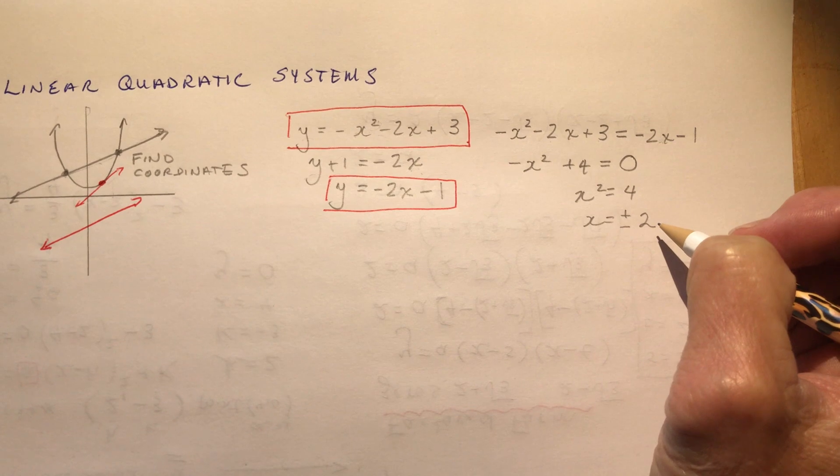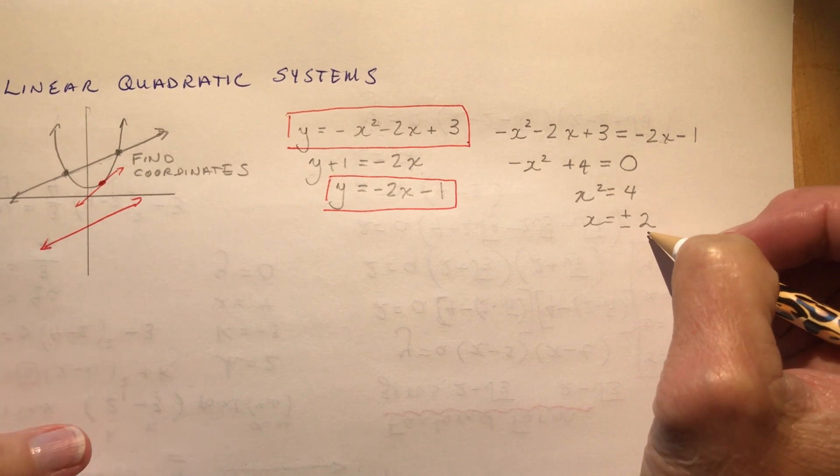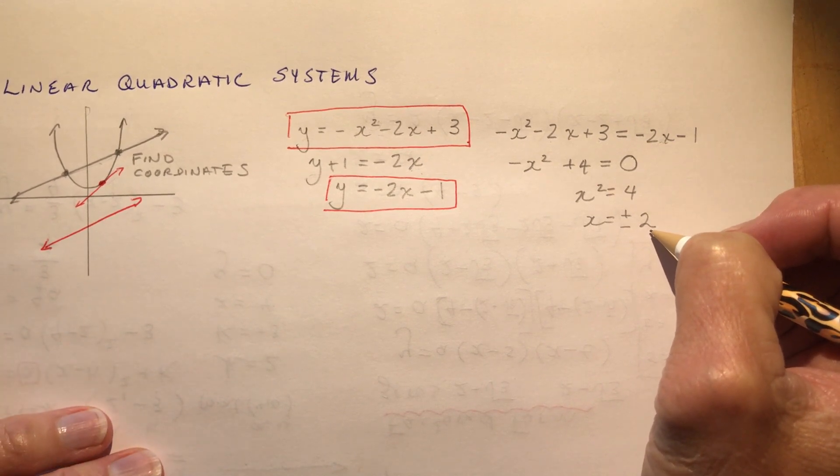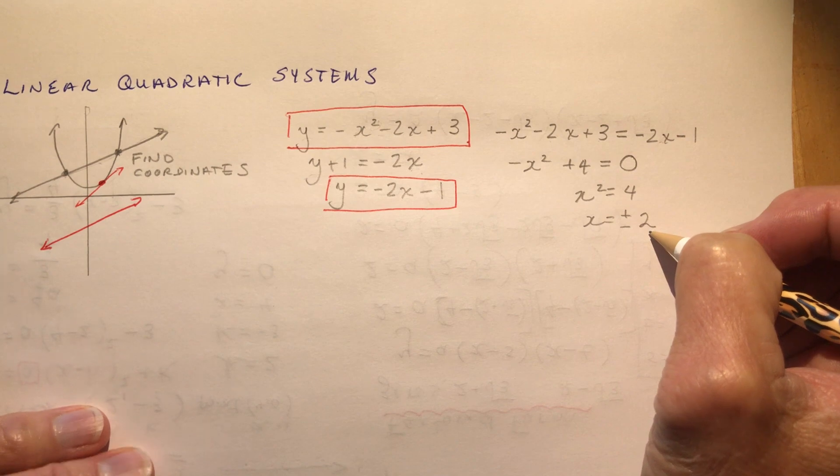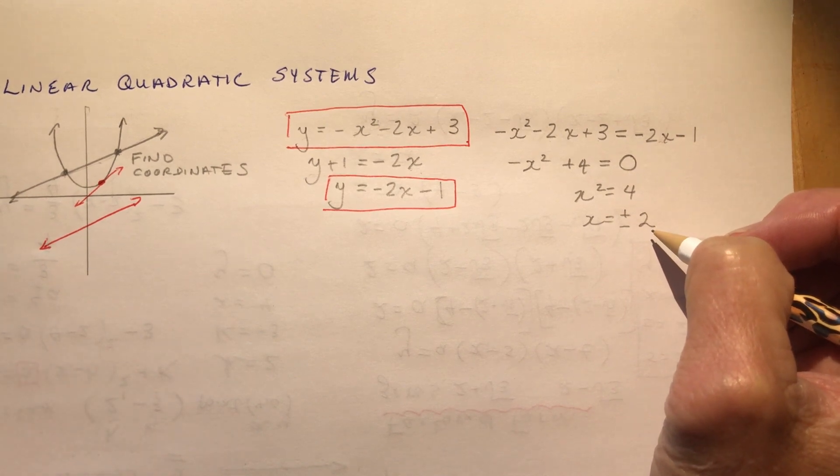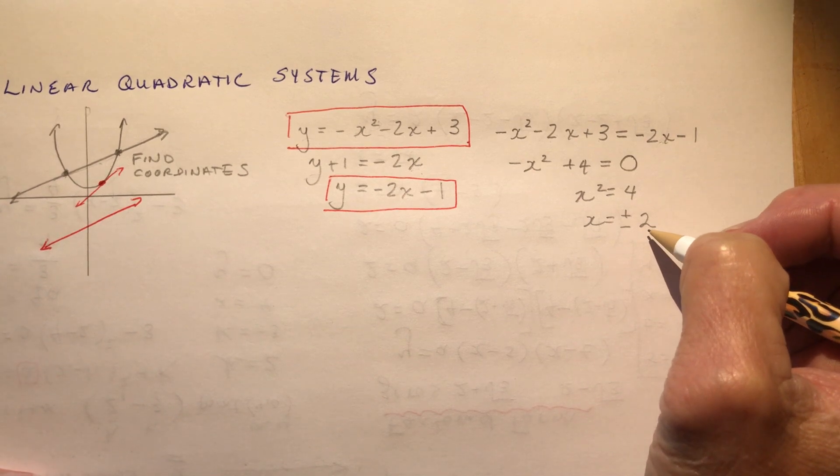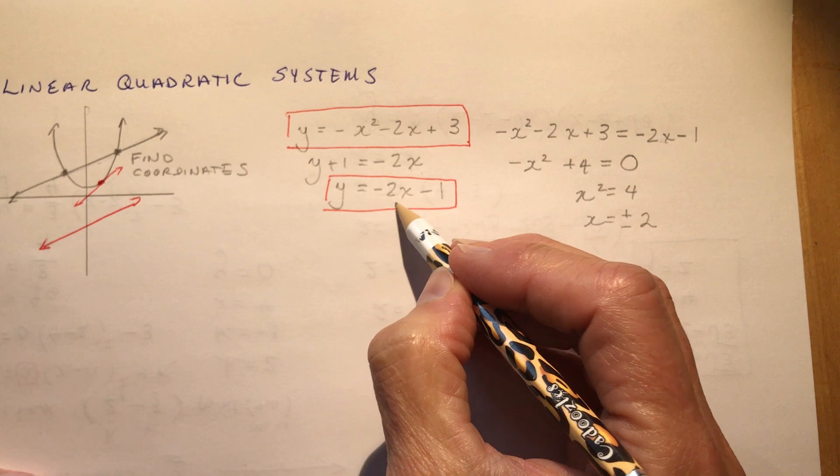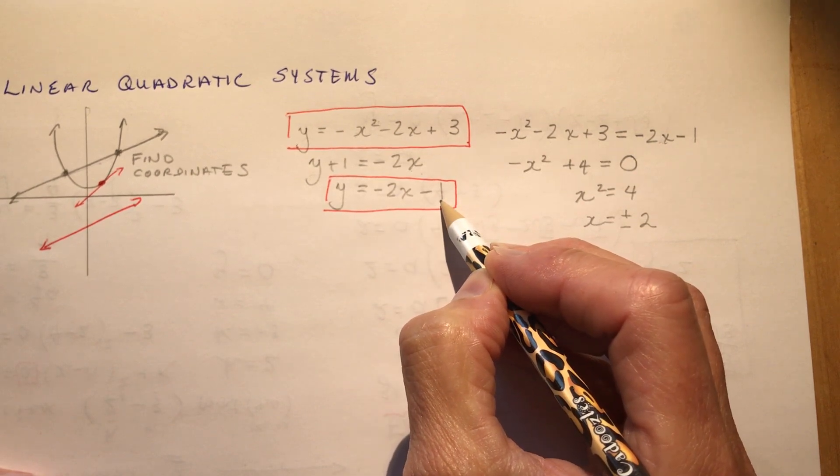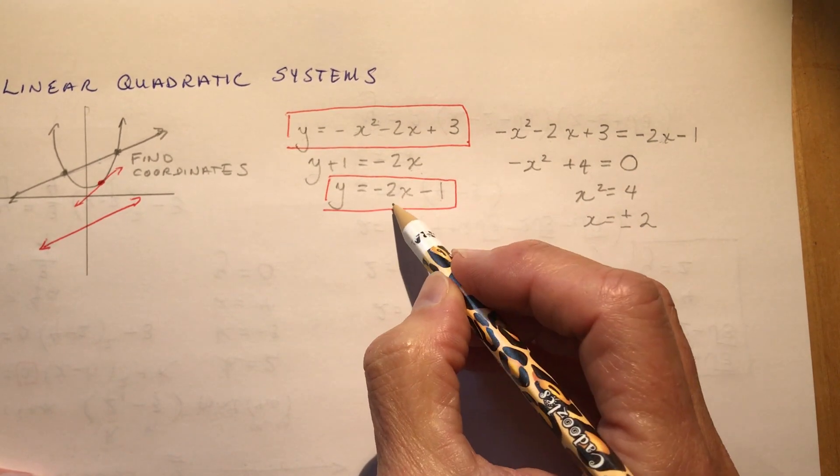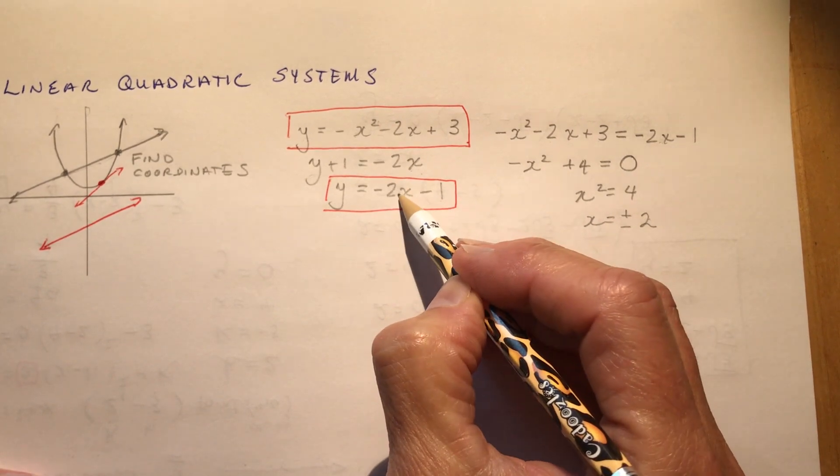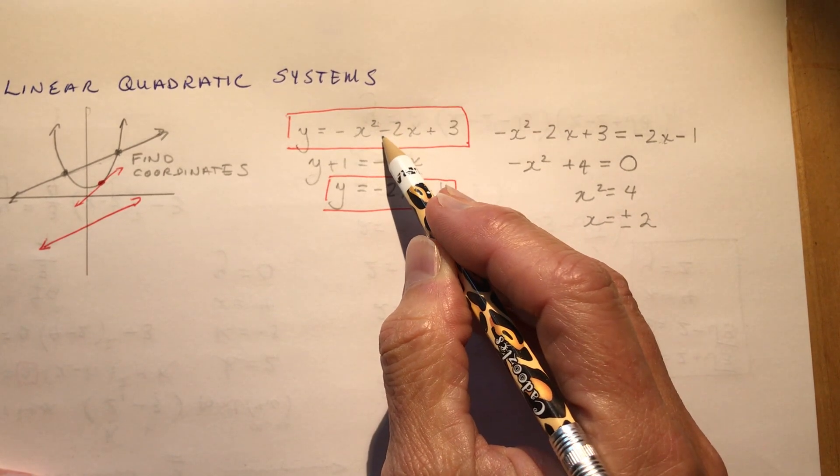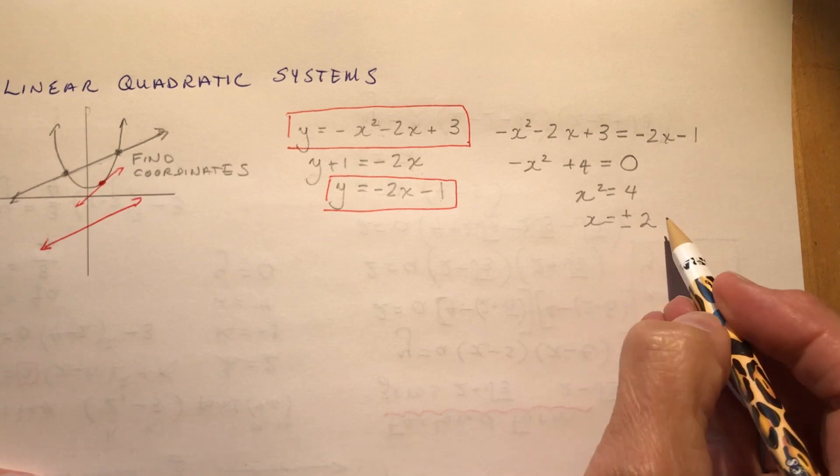So again, this isn't the solution now. This is the x coordinate of where the graph, the two graphs will intersect. So you think if you set them equal to each other, that's going to tell you where they are equal. So to find the y coordinate, I would probably plug it into the linear equation because it's easier to solve. But you will get the same answer if you plugged in a positive 2 here or a positive 2 up here. Believe me, you can try it on your own.